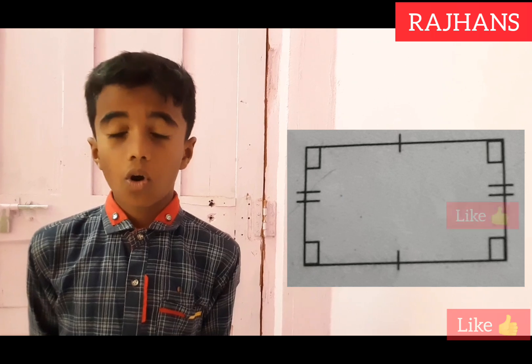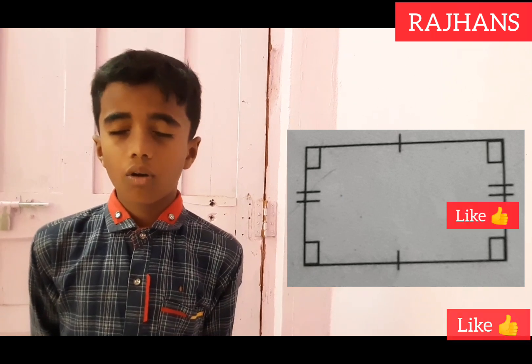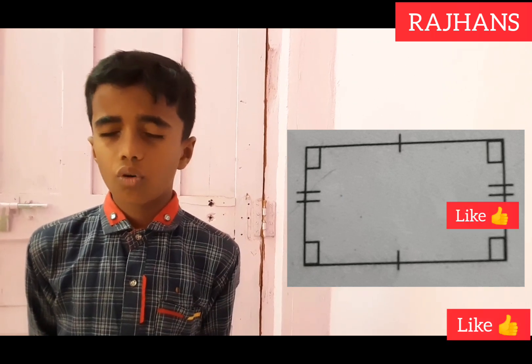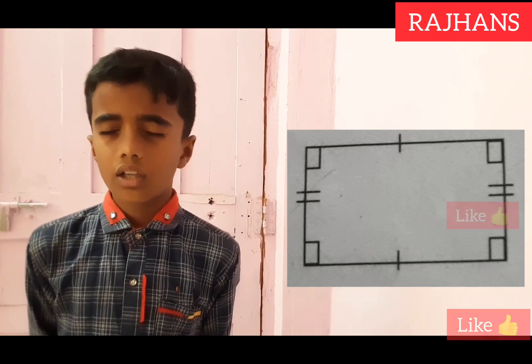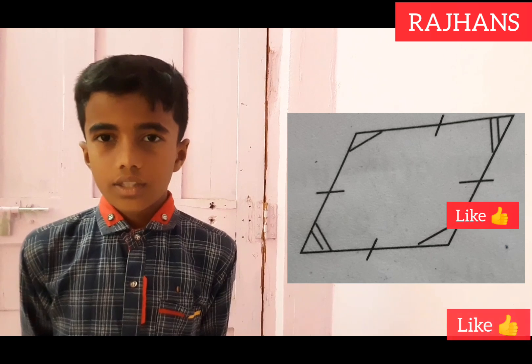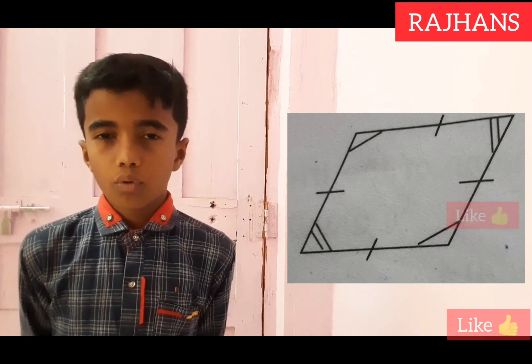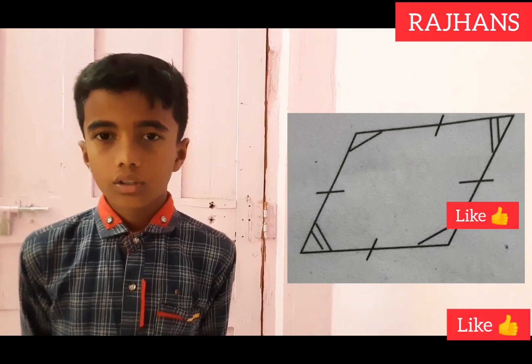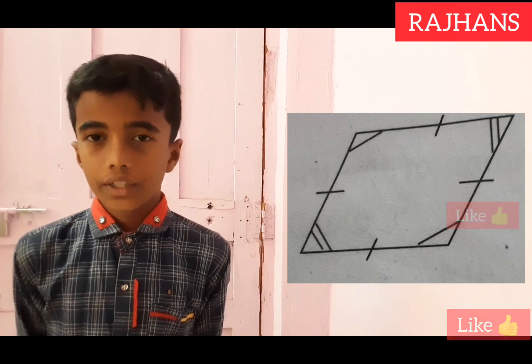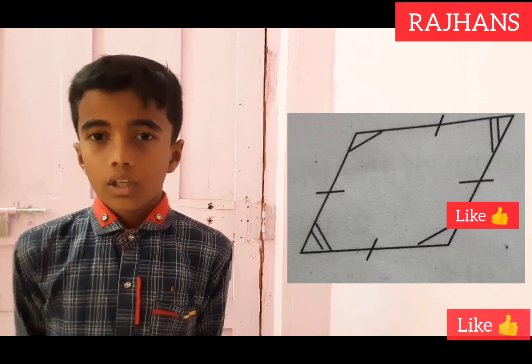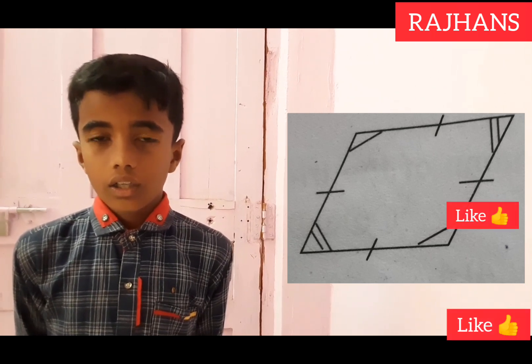All the 4 sides, all the angles — all the 4 angles are right angles. Rhombus: it has 4 sides that are equal.